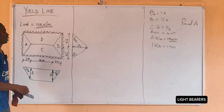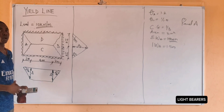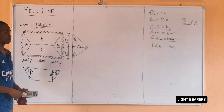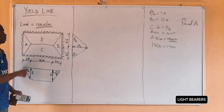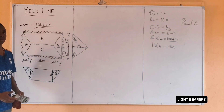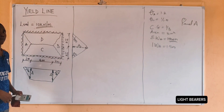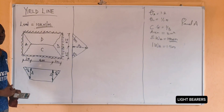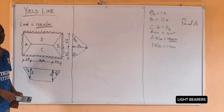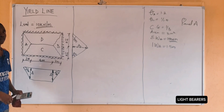Now let's take panel C and calculate the unknown parameters. Since panel A and panel B are symmetrical, external work done for panel A equals external work done for panel B, and internal work done for panel A equals internal work done for panel B.